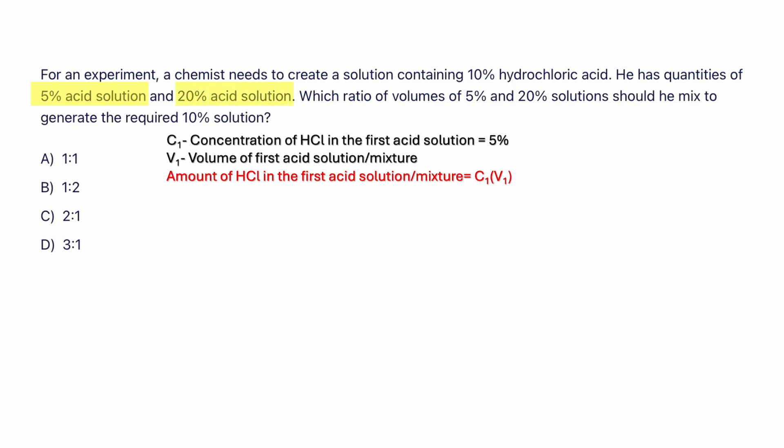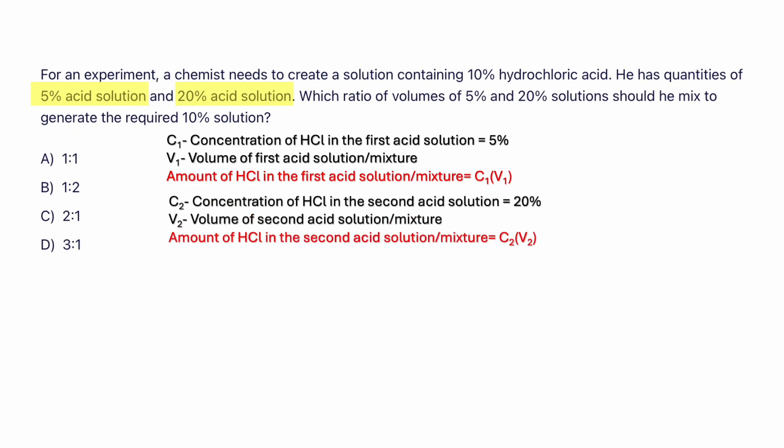The next is 20% acid solution — mixing 5% acid solution with the 20% acid solution. Let's say C2 is the concentration of hydrochloric acid in the second acid solution, which is 20%. And V2 is the volume of the second acid solution. To find the amount, you just multiply C2 times V2 to get the amount of HCl in the second acid solution.